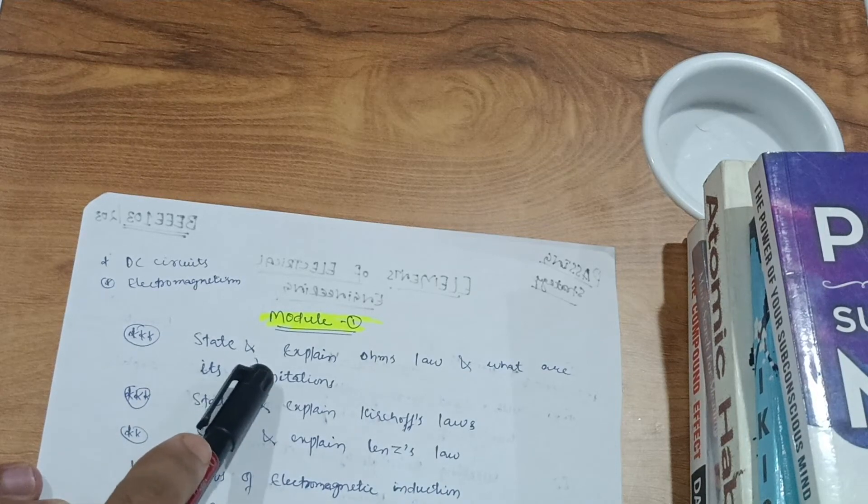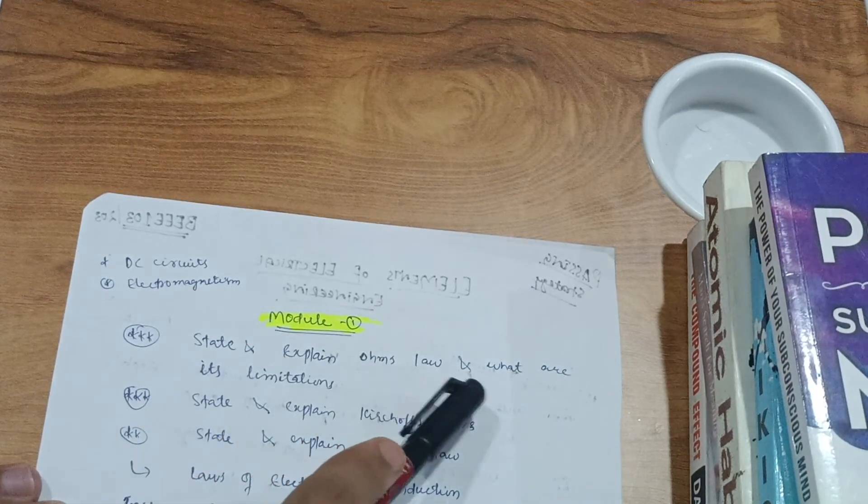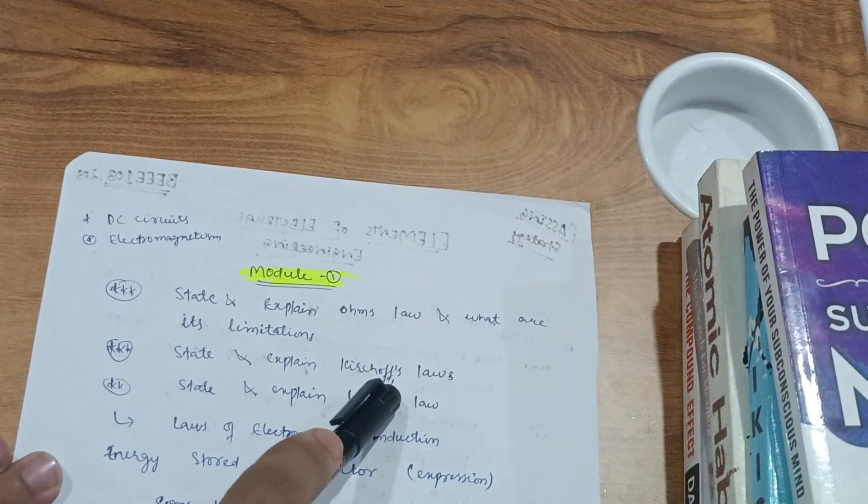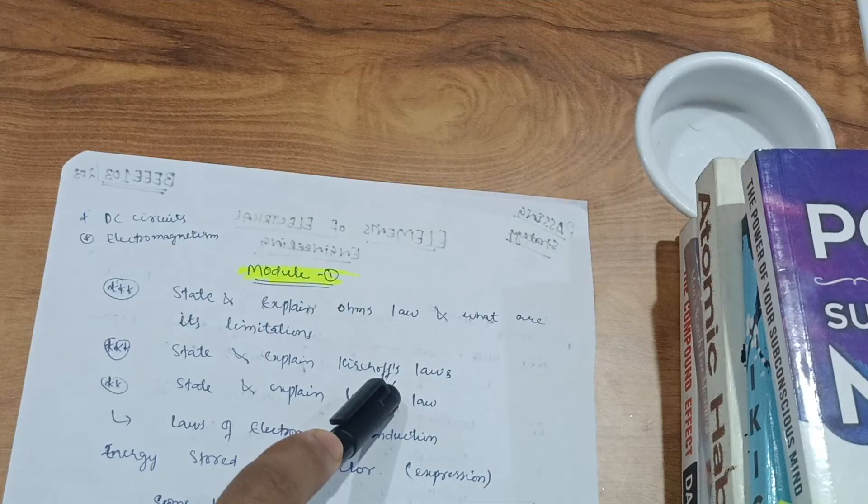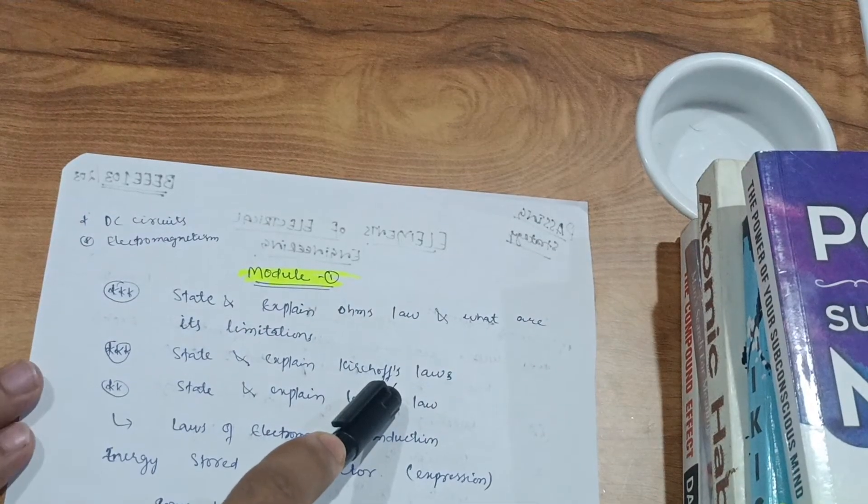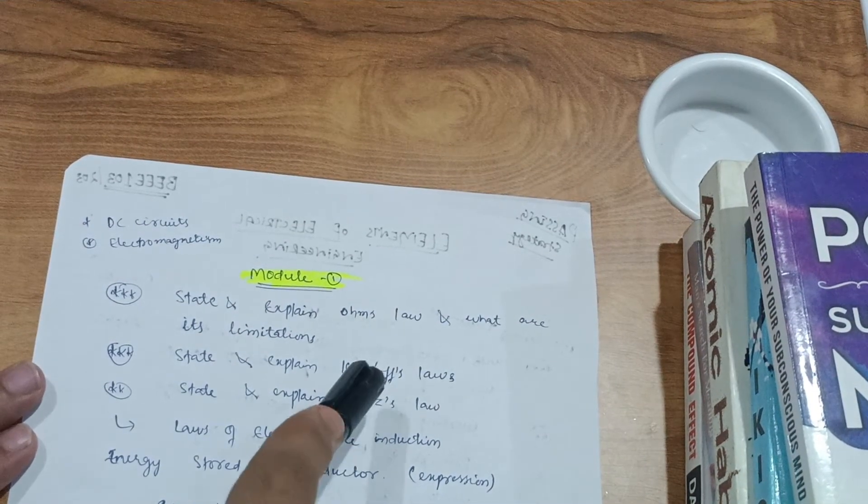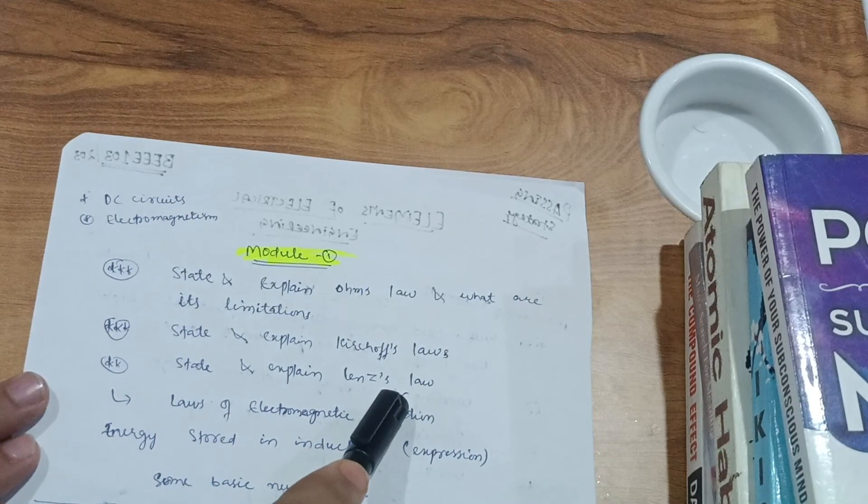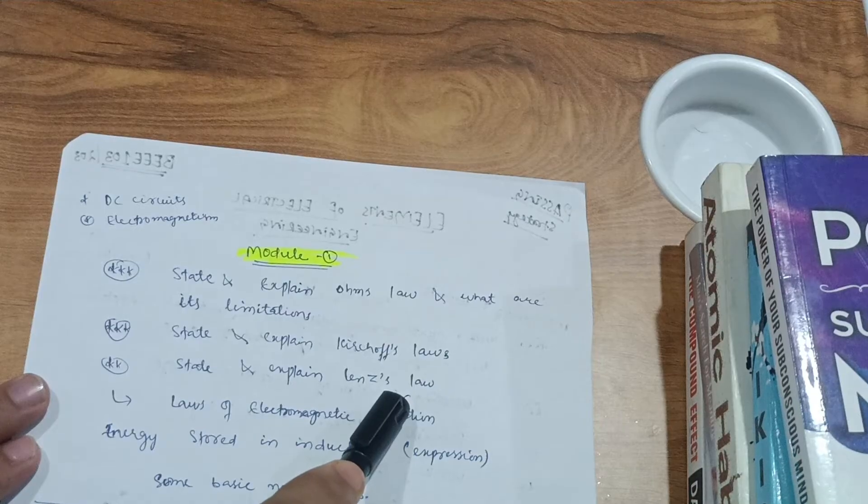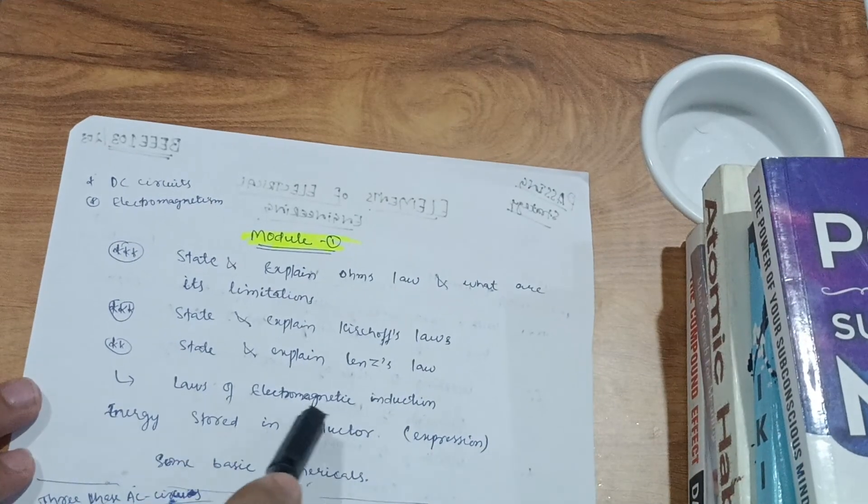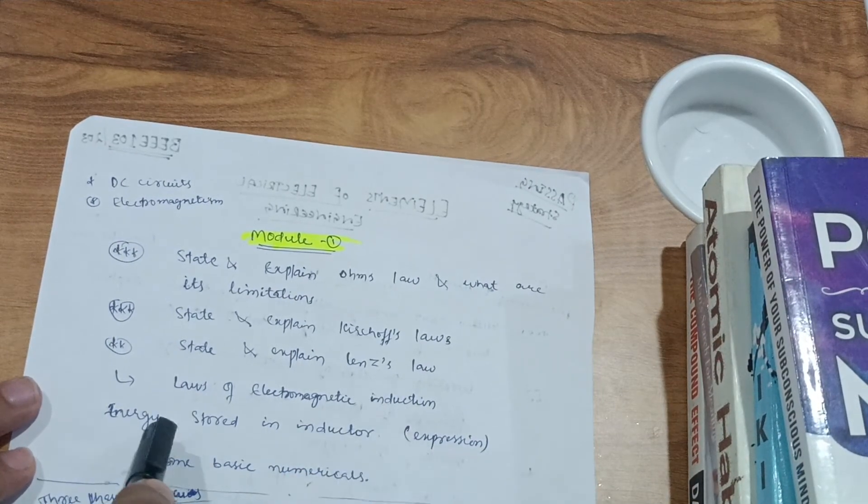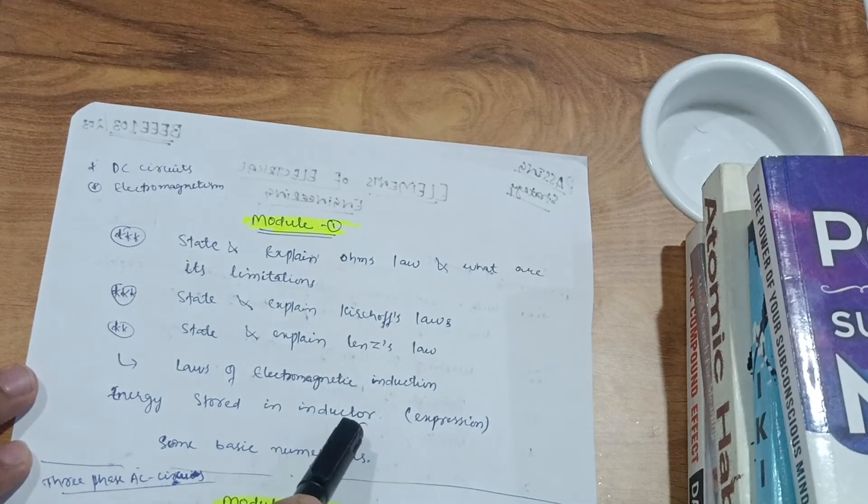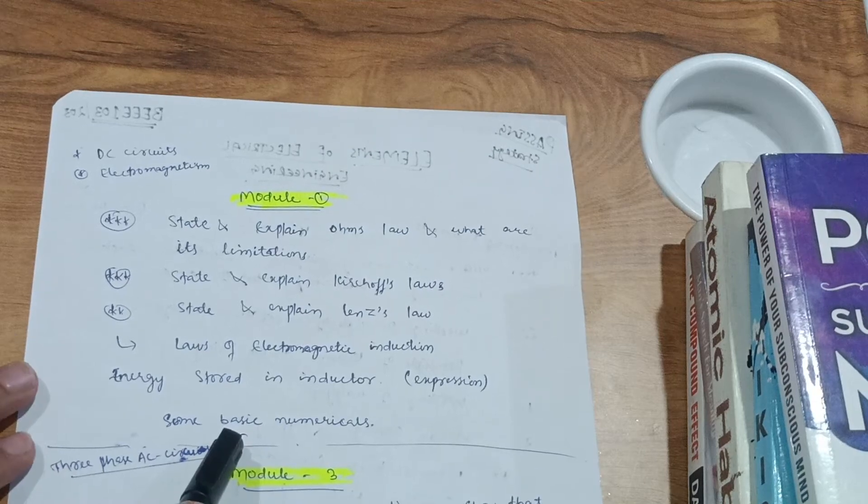As it is the 12th basic concept, you may already be aware of Ohm's law and Kirchhoff's law also. Most probable question will be state and explain Ohm's law and what are its limitations. Next one is state and explain Kirchhoff's laws, very simple ones, current law and voltage law, and try some problems also. Next one is state and explain Lenz's law, this is the additional topic they have added into this particular module this time, and laws of electromagnetic induction. Also one derivation part is there, that is expression for the energy stored in the inductor, and some basic problems you have to try.